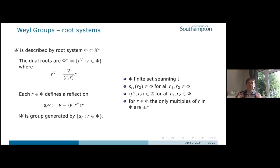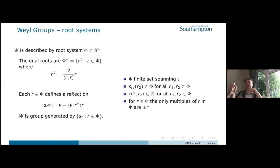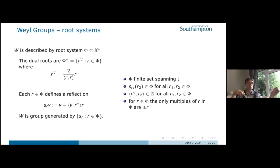The key properties that a set of roots must have are: they span the Lie algebra T; they are closed under reflections (so if a root is there, minus that root is also there, and reflections by other roots stay in the set); and there is an integral pairing between roots and co-roots. The roots sat in the characters and the co-roots in the co-characters. If a root is there, minus it should be there as well, but that should be the only scalar multiple.